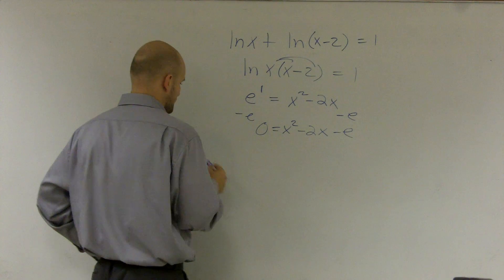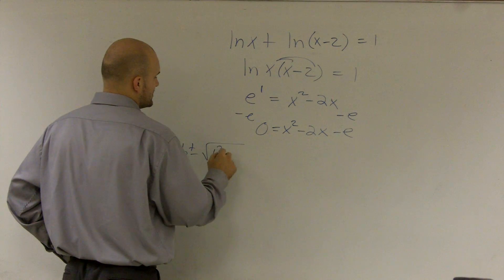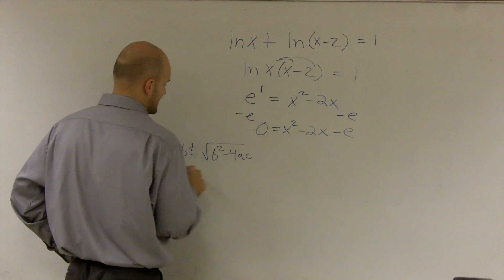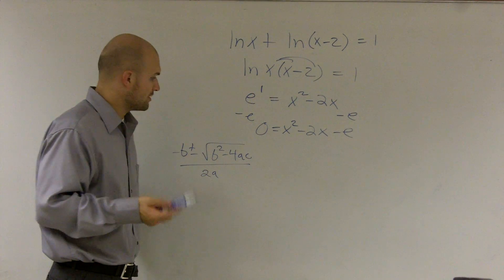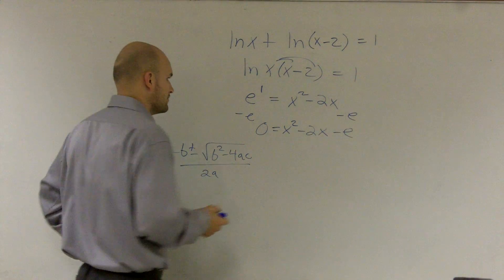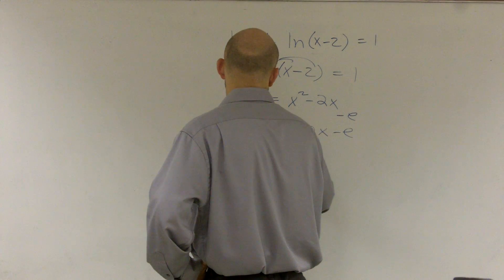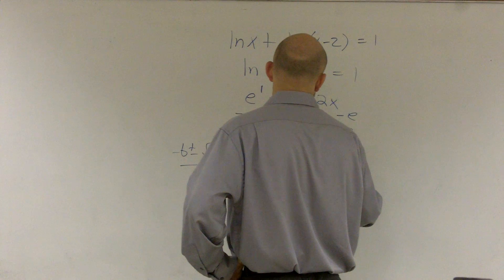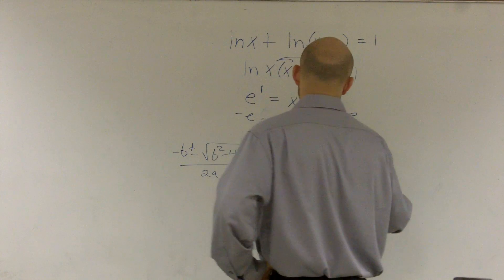Remember, quadratic formula is opposite of b plus or minus square root b squared minus 4 times a times c all over 2a. So I need to determine what is my b, what is my a, and what is my c? Well, remember, you have 0 equals ax squared plus bx plus c.